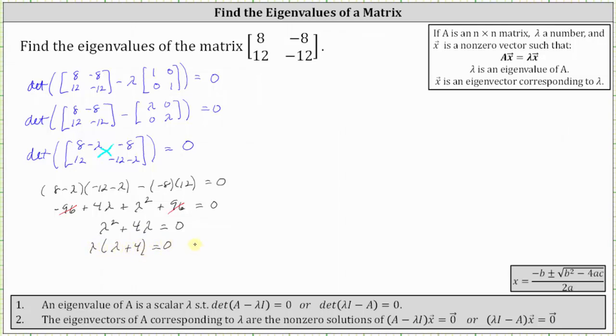Because the product equals zero, either λ = 0, or λ + 4 = 0, and therefore λ = -4.